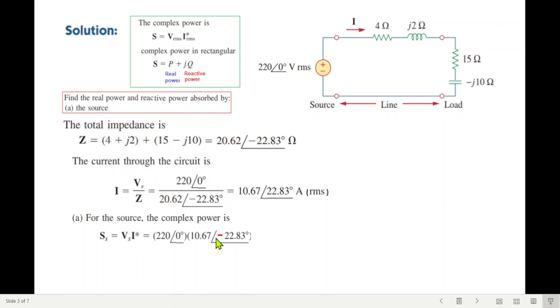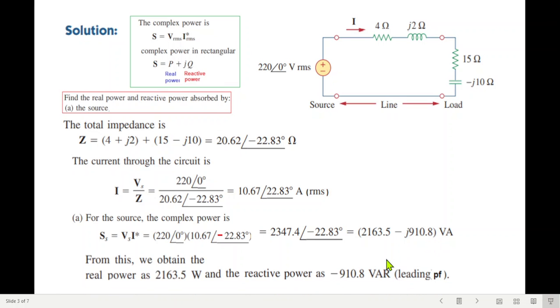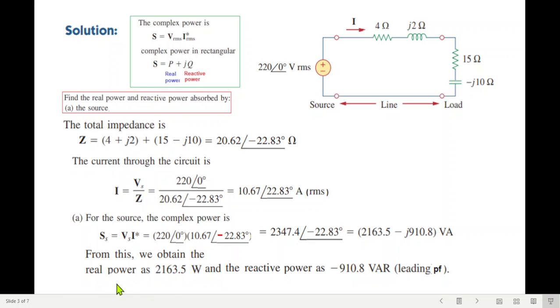So V over Z gives the current. Using the formula for complex power, VS is 220 at zero degrees, I is at angle. The conjugate means we change the angle sign. Positive sign becomes negative sign. Calculate in complex mode. The answer comes in P and Q form, P plus jQ. Converting to rectangular form, we obtain the real power to be 2163.5 watts and reactive power minus 910.8 VAR.